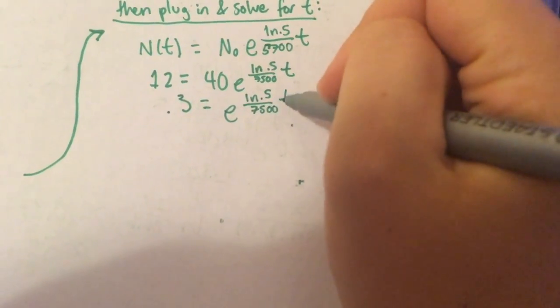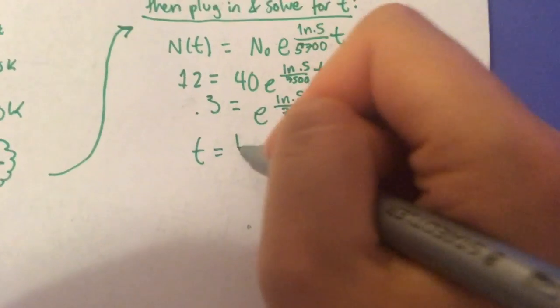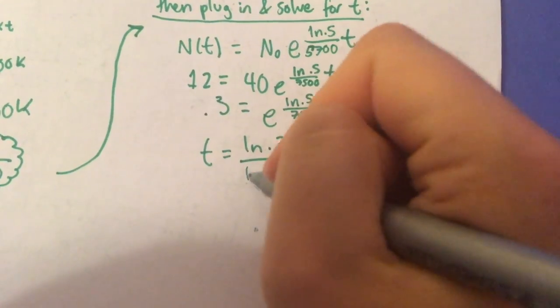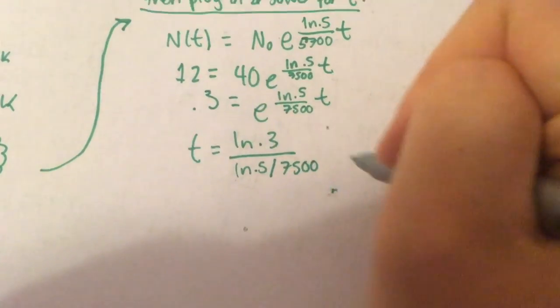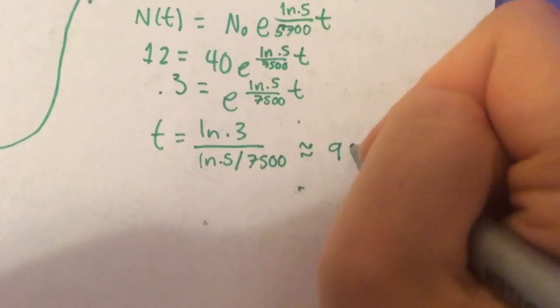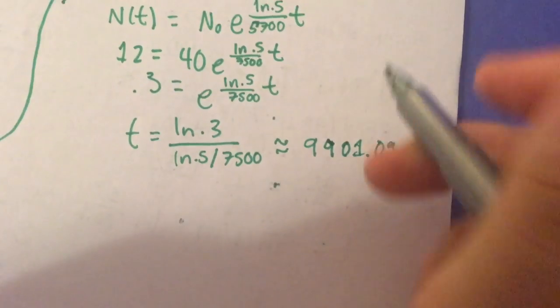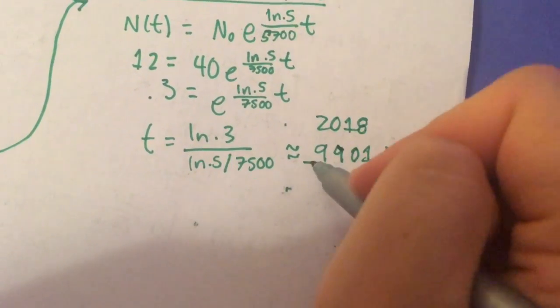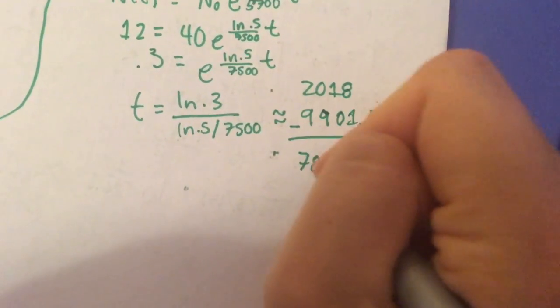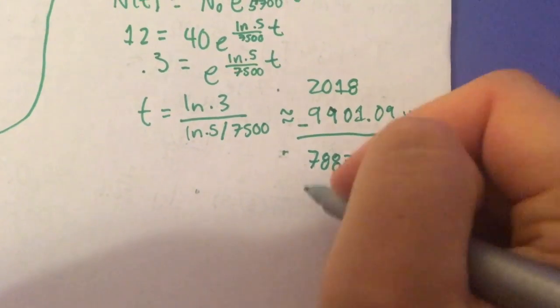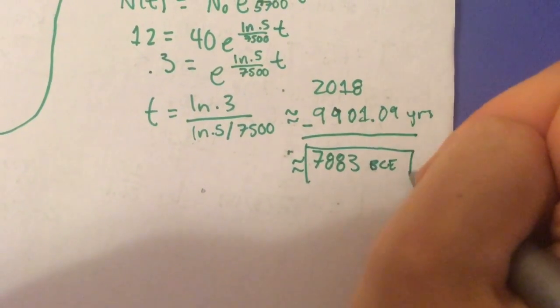We're simplifying here, and we get t equals the natural log of 0.3 divided by our original k, which gives us 9,901 years. We subtract that from our current year of 2018, and we find that the woolly mammoth died in 7,883 BCE.